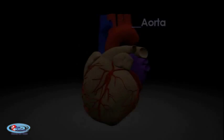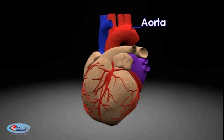Let's see the major parts of the heart. The aorta is the largest artery in the human body, originating from the left ventricle of the heart and extending down to the abdomen, where it bifurcates into two smaller arteries. The aorta distributes oxygenated blood to all parts of the body through the systemic circulation.